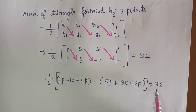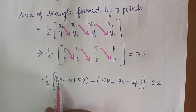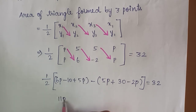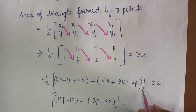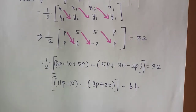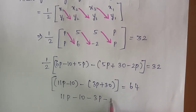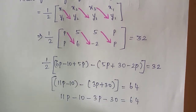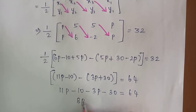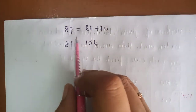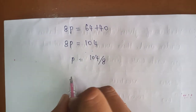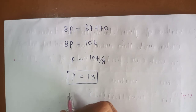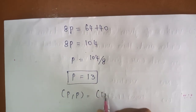Taking (1/2) to the other side: 11p - 10 - 3p - 30 = 64. So 8p - 40 = 64, therefore 8p = 104, and p = 104 ÷ 8 = 13. Therefore the value of p is 13, and hence the point (p, p) is (13, 13).